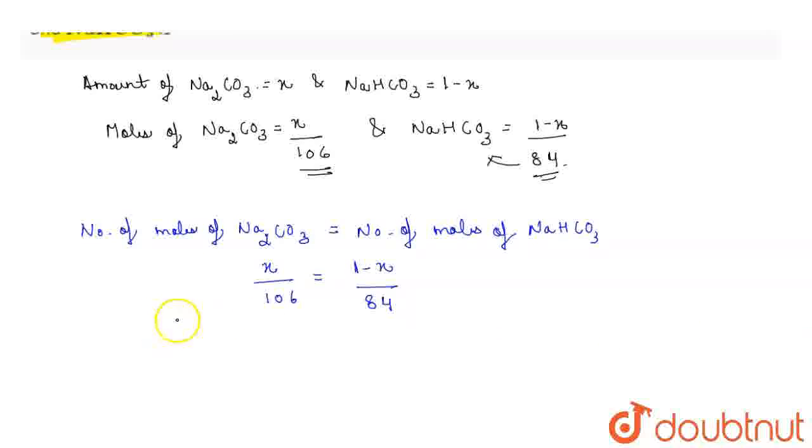So, we will get 84x is equal to 106 minus 106x. And after solving this, we will get the value of x that is 0.558.